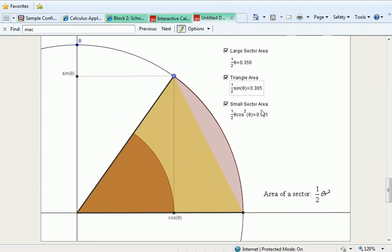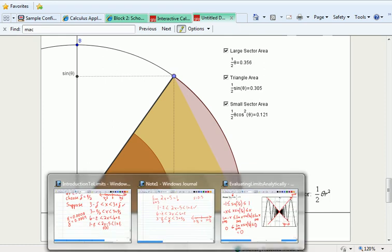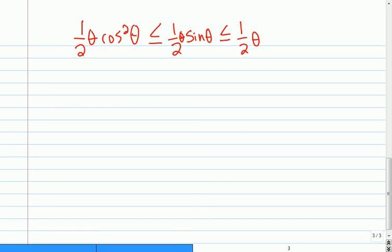So these functions, if I was to take them and put them into a squeeze theorem, then what I have is the small sector is 1/2 theta cosine squared theta, which is less than or equal to 1/2 sine theta, which is less than or equal to 1/2 theta. So those are the three pieces. Of course I can get rid of the halves, and I can get rid of the thetas, and I would end up with cos squared theta is less than or equal to sine theta divided by theta, which is less than or equal to 1.